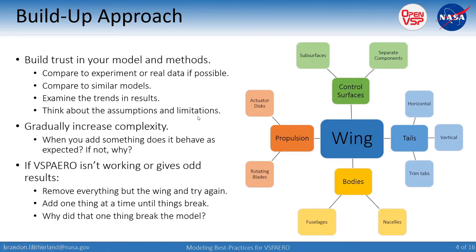The idea here is to build trust in your model and your methods. So if you have experimental data, great — compare to that and try and calibrate everything to it, or you can compare to a similar model. You should be able to see if something is coming out the way that you would expect. You can also look at the trends in your results. VSP Aero is typically an inviscid potential method, so as Dave mentioned, the lift curve is just going to keep climbing until you go past sine two alpha. Keep in mind the assumptions and limitations of both the solver and the things in your model.